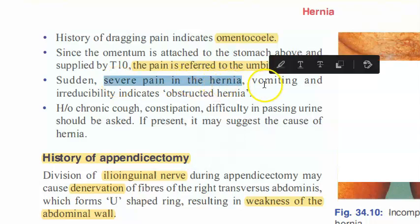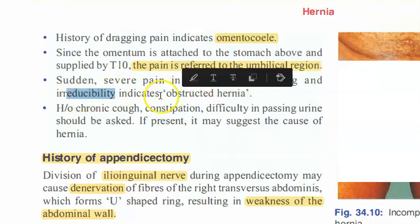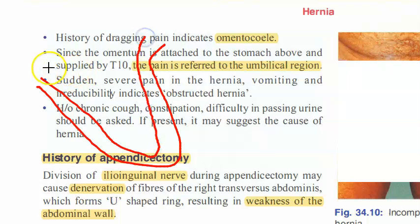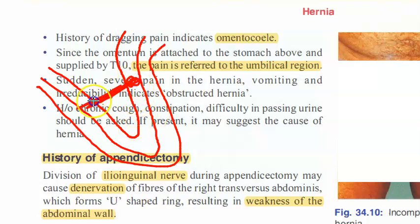If there is severe pain in the hernia, vomiting, and irreducibility, it can be an obstructed hernia. Obstructed hernia means the path of your feces — the small intestine content — is obstructed. The person will have vomiting and it is also irreducible. Severe pain, vomiting, and irreducibility indicate an obstructed hernia.